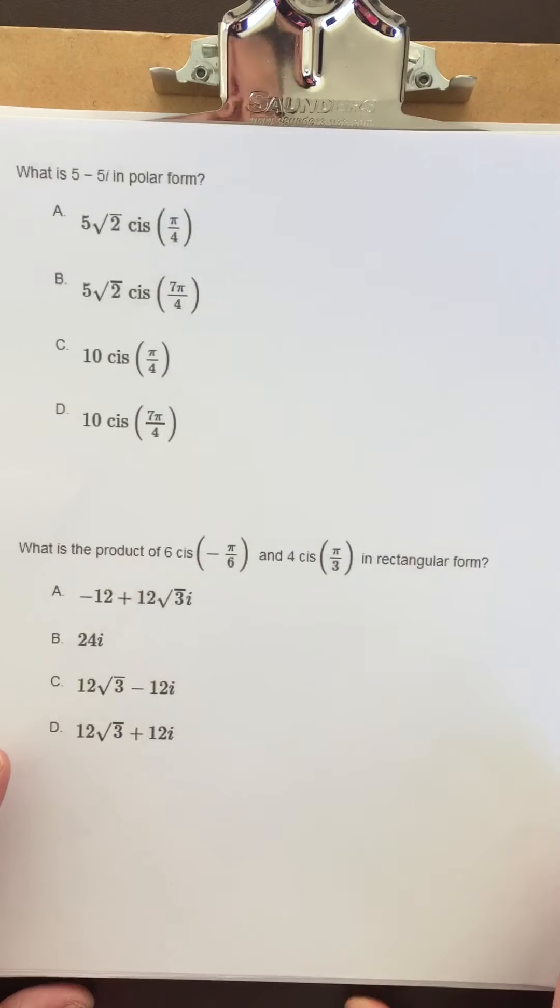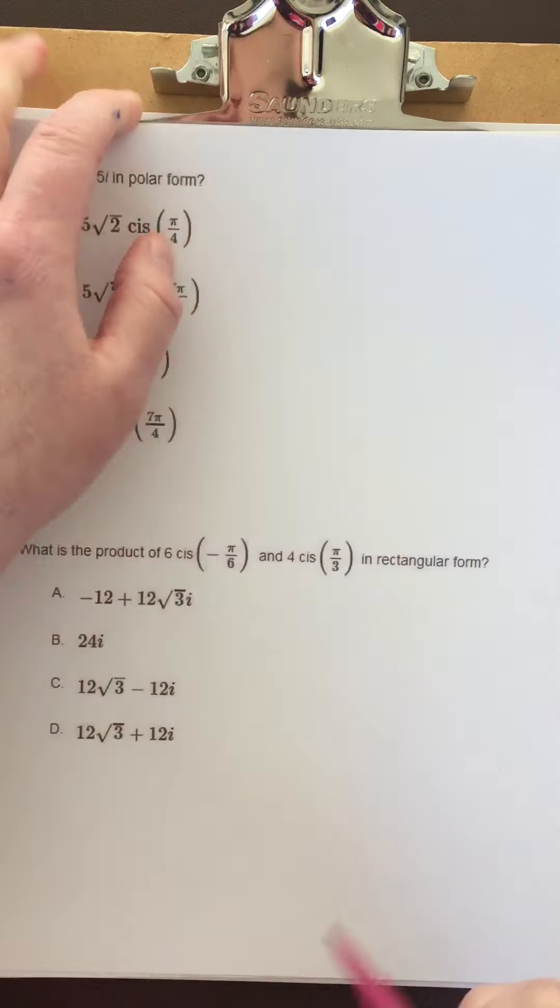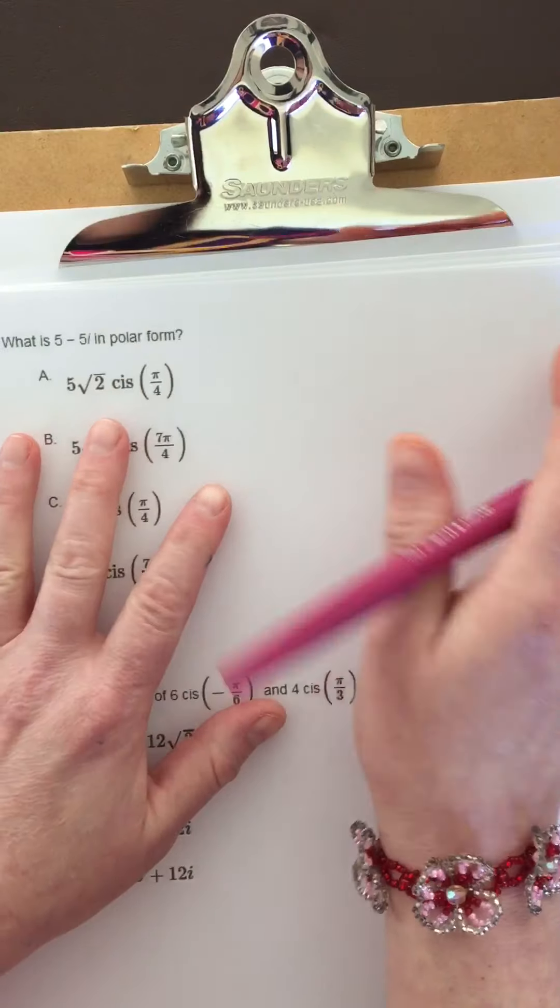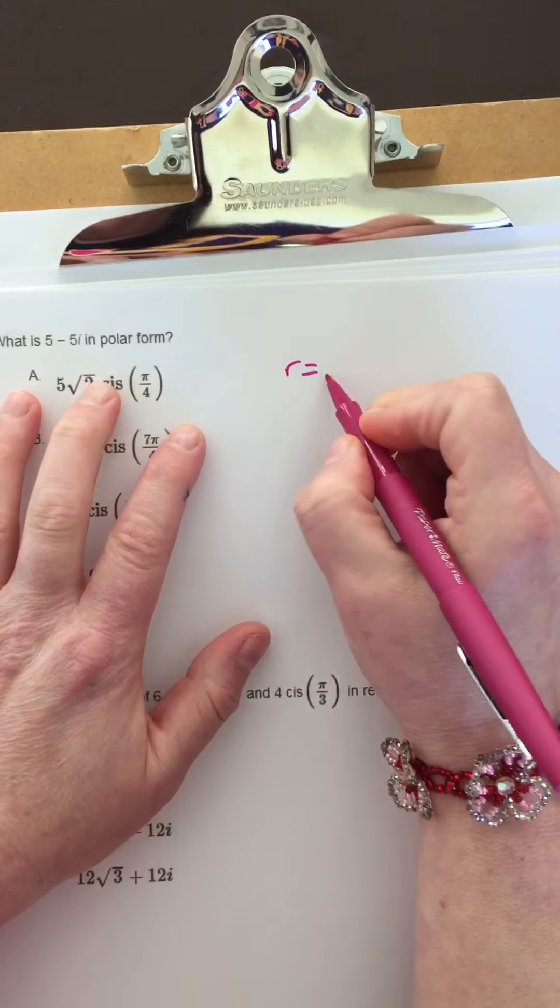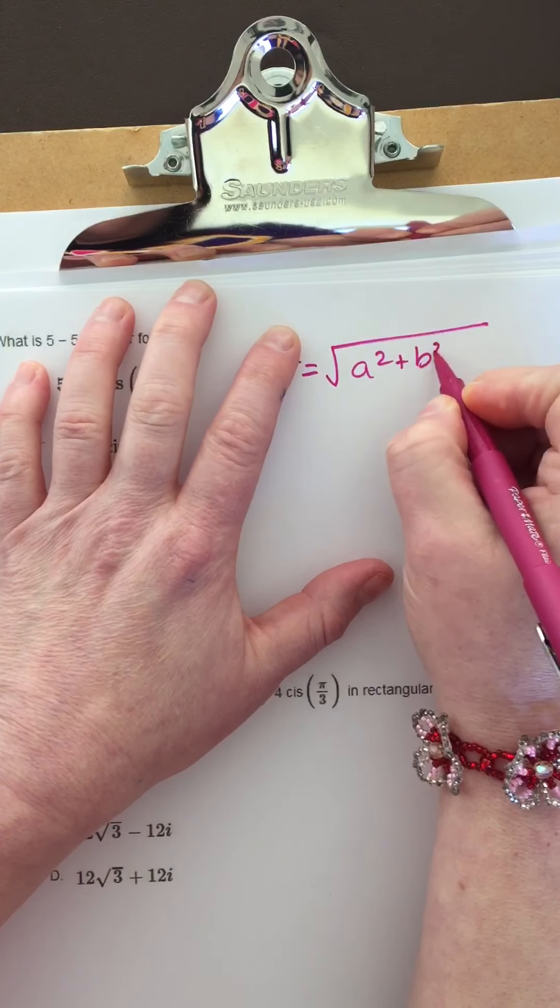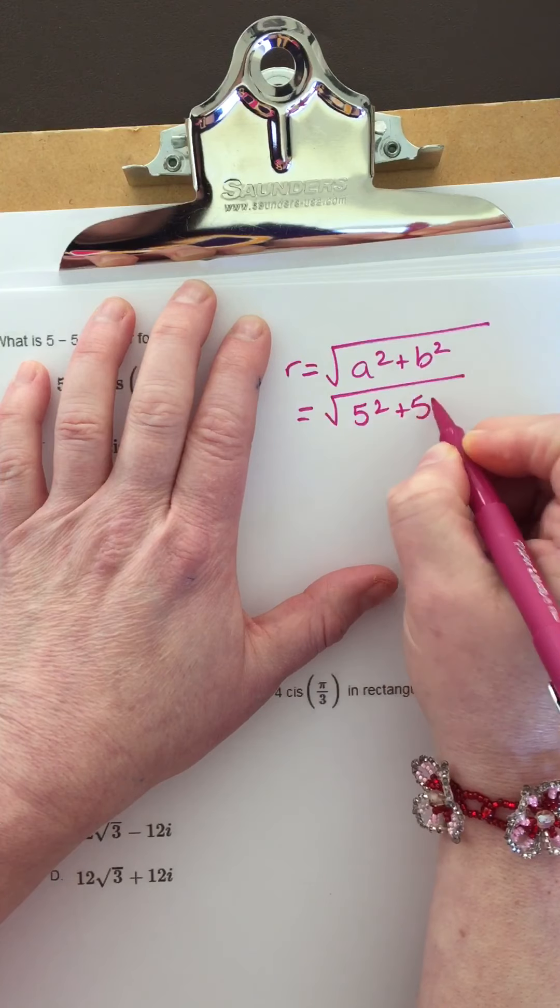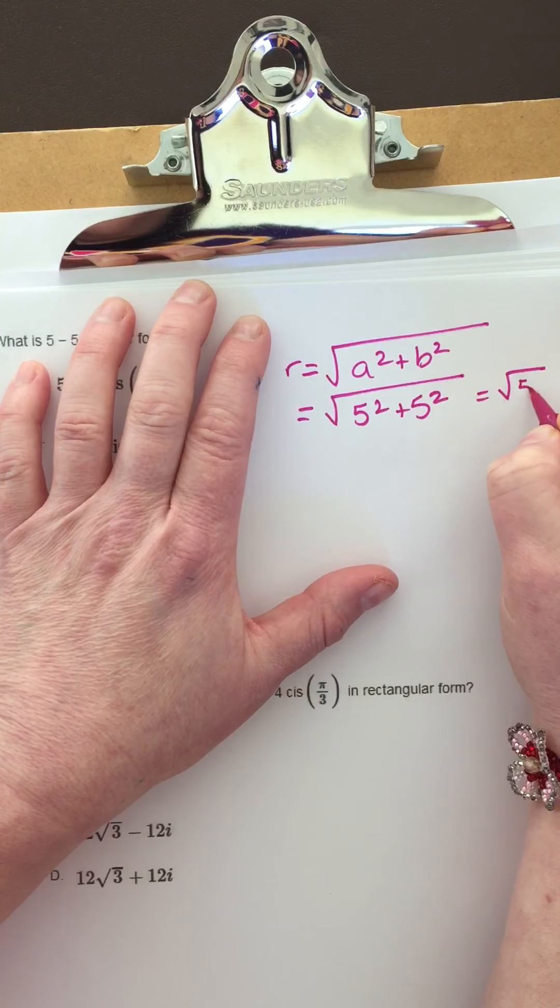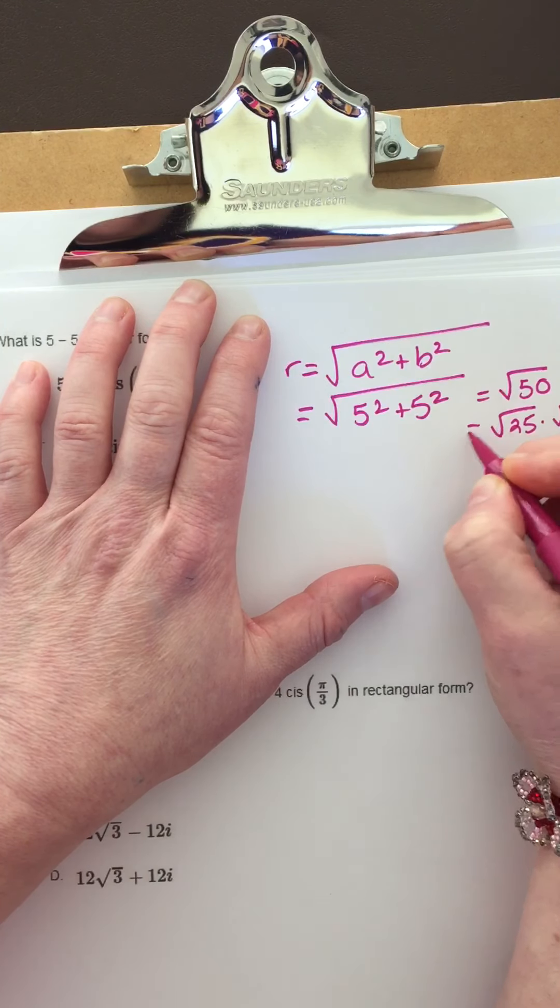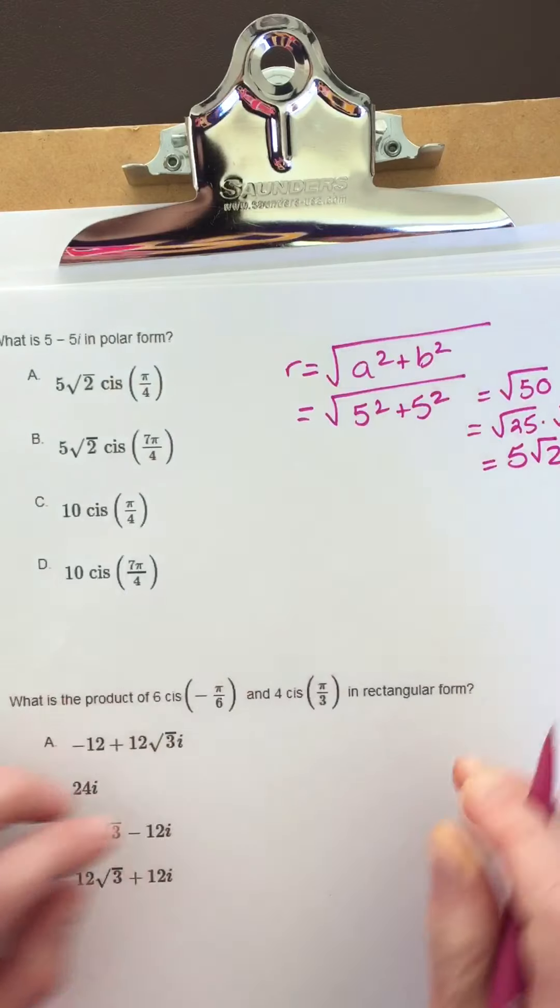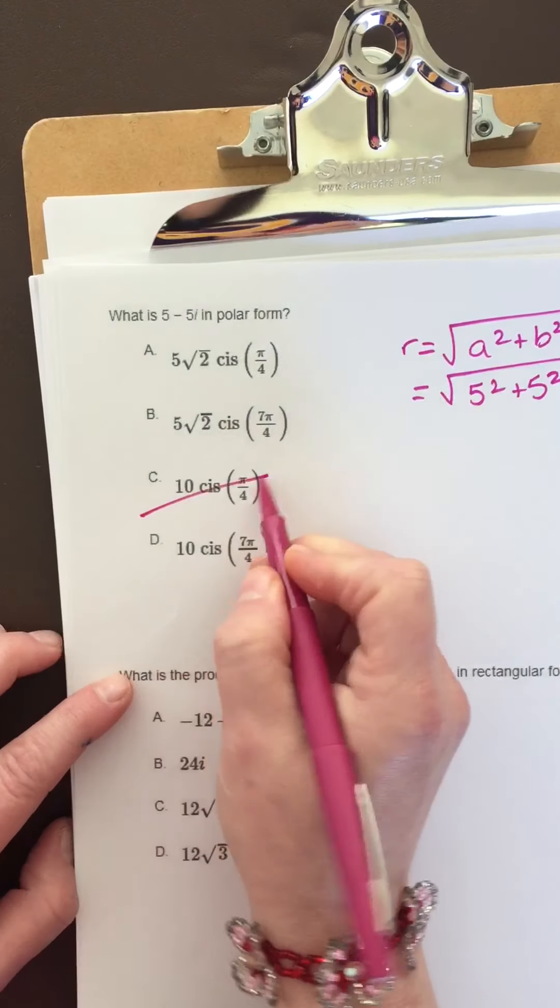The last two I'm going to go over. This one says, what is 5 minus 5i in polar form? Let's do R first. R equals the square root of A squared plus B squared, which is 5 squared plus 5 squared, that's 25 and 25. That would be the square root of 50, which is the square root of 25 times the square root of 2. That would be 5 square root of 2, and knowing that narrows my answer choices down.